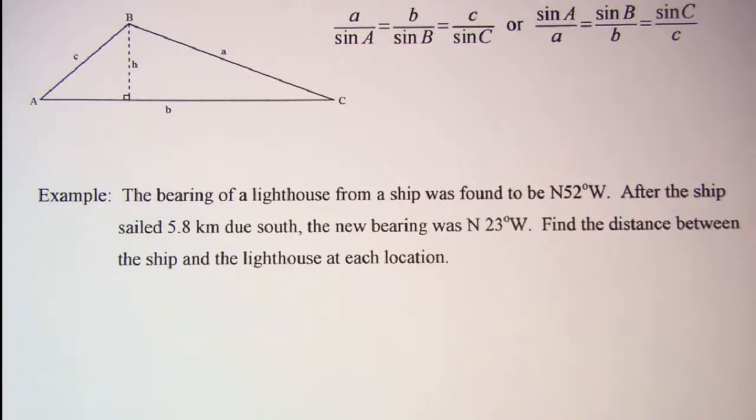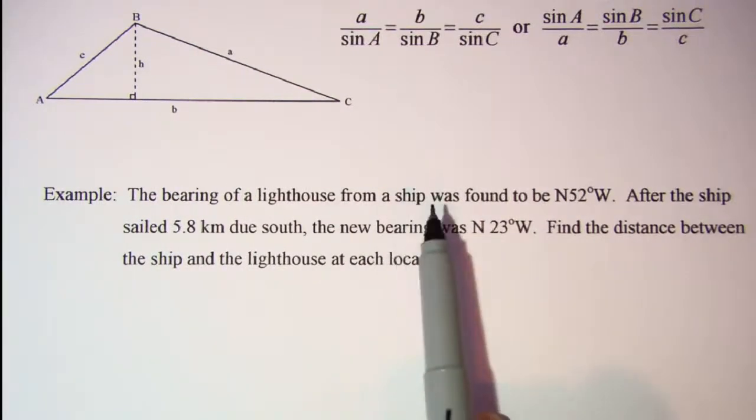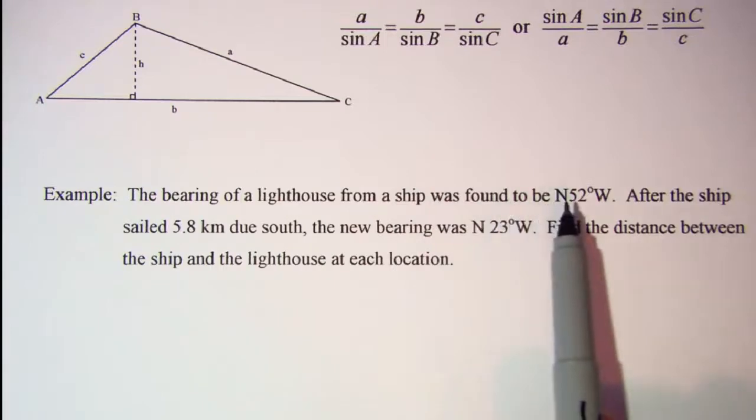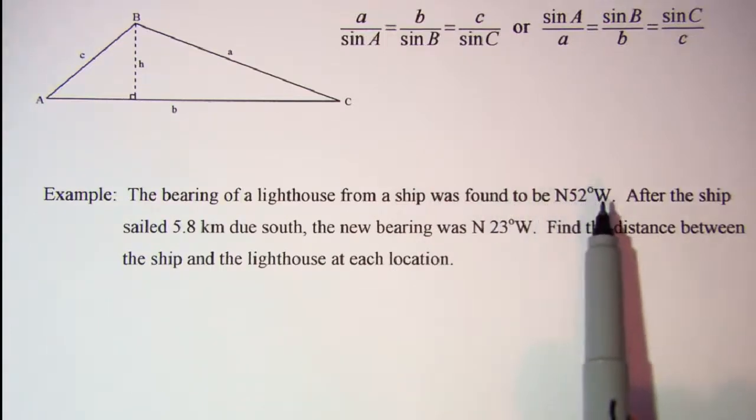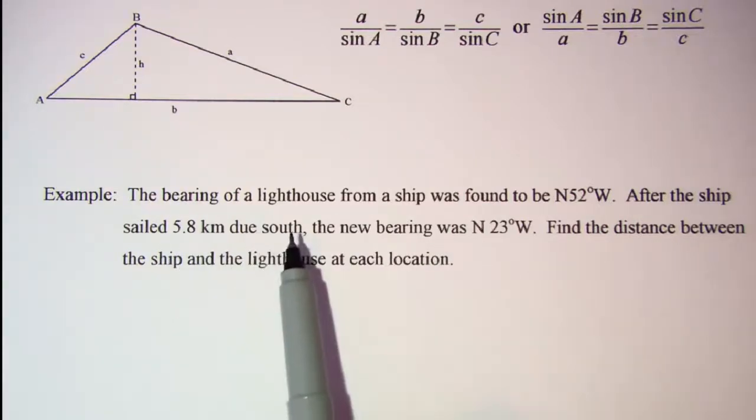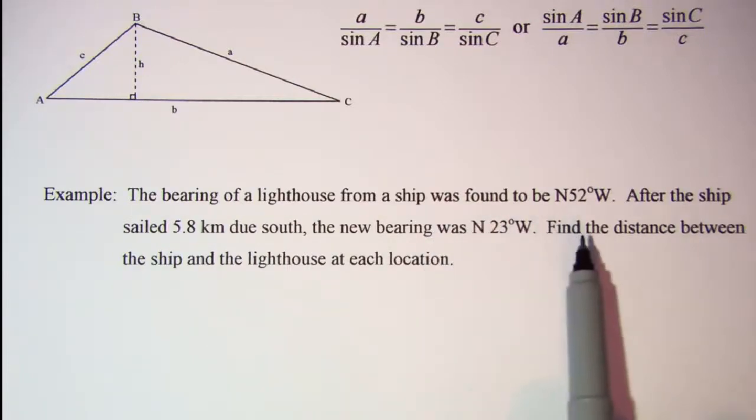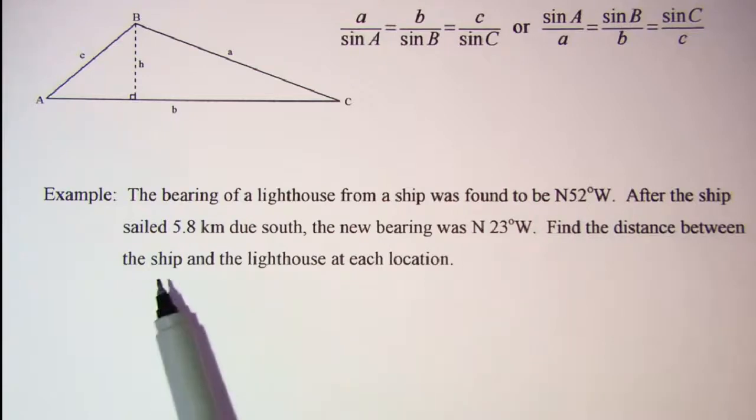Now, the problem that we'll be doing is the bearing of a lighthouse from a ship was found to be north 52 degrees west. After the ship sailed 5.8 kilometers due south, the new bearing was north 23 degrees west. Find the distance between the ship and the lighthouse at each location.